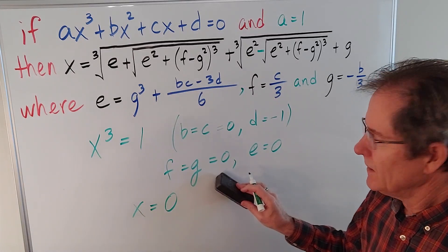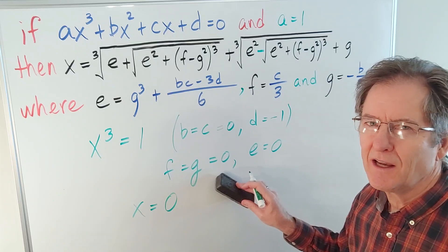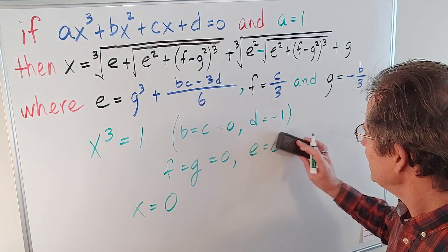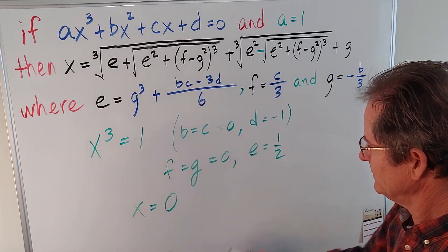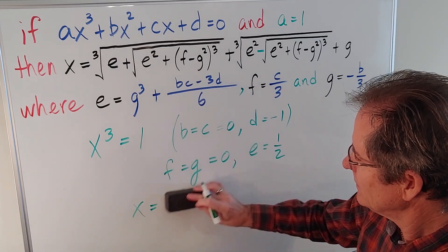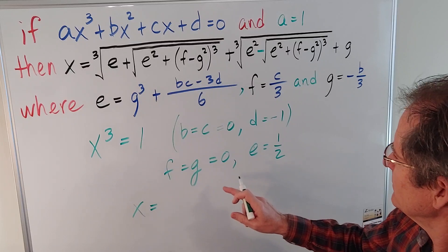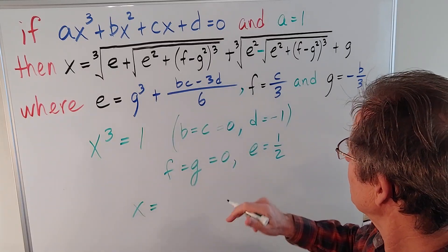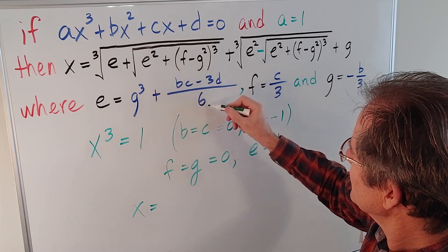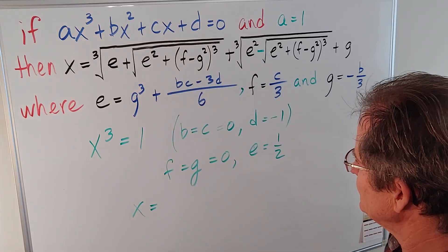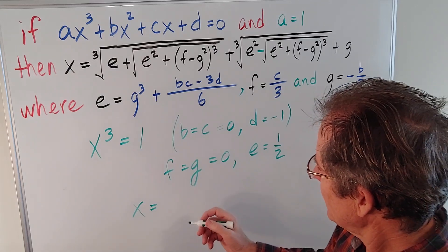Once again, f and g are 0. And when I say f and g, I'm not swearing. But e is not 0 anymore. e turns out to be a half. You can check that over here really quickly, because you get positive 3 divided by 6. Everything else is 0.